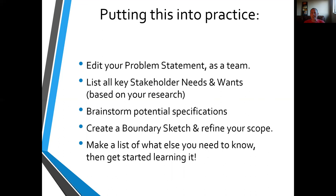So putting this into practice — now it's on you. You've got a draft problem statement; take that back to your team, compare them, massage the wording, and come up with some final wording. Evaluate it — does it make sense, does it work? If not, edit it. Try to go through a few iterations before you finalize it. List out those needs and wants based on your research and come up with some specifications — we'll need those next week for quality function deployment, so you can start thinking about them now. Create that boundary sketch to define your scope, and if your scope is considerably different from what your sponsor proposed, have a meeting and explain why. And as always, keep a list of things you think you're going to need to know but don't know already, so you can dive into those.